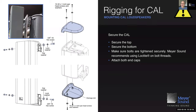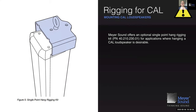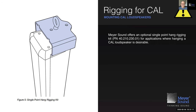That is a two-point solution, but there is also a single-point solution that allows you to pick up the CAL loudspeaker at one point and still ensure the loudspeaker remains vertical — perpendicular to the horizontal — even using a single pickup point.